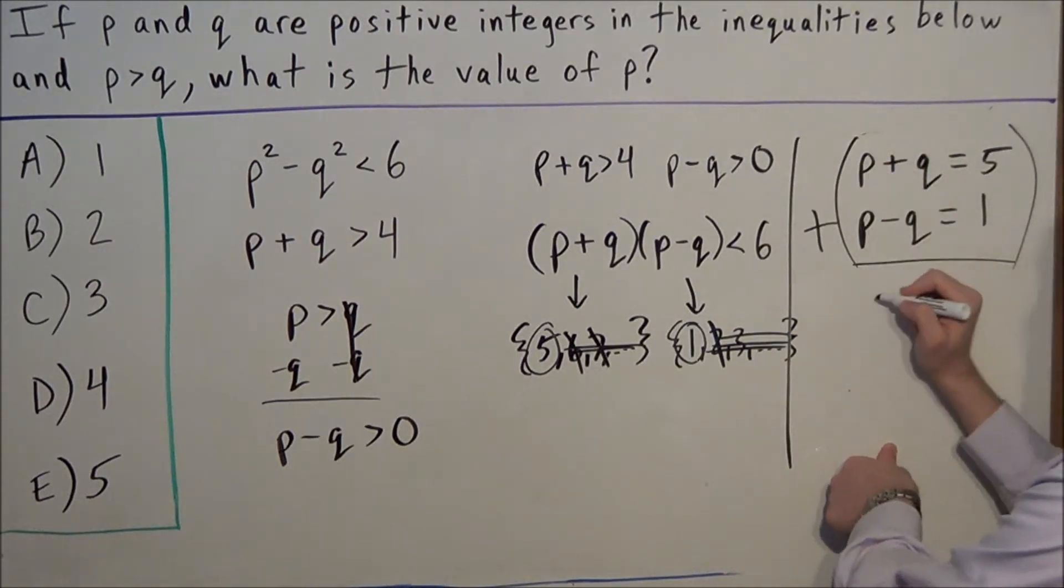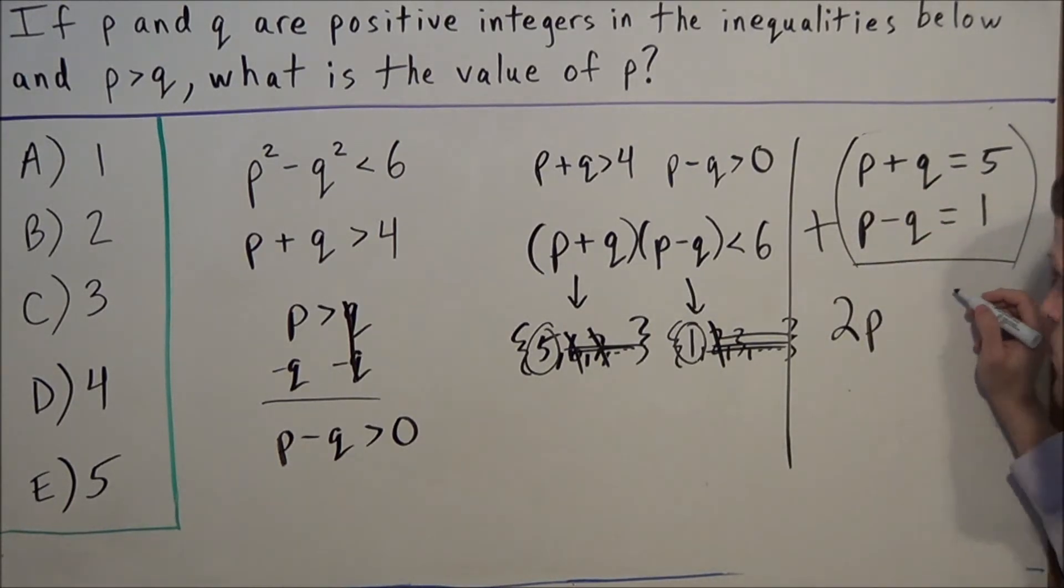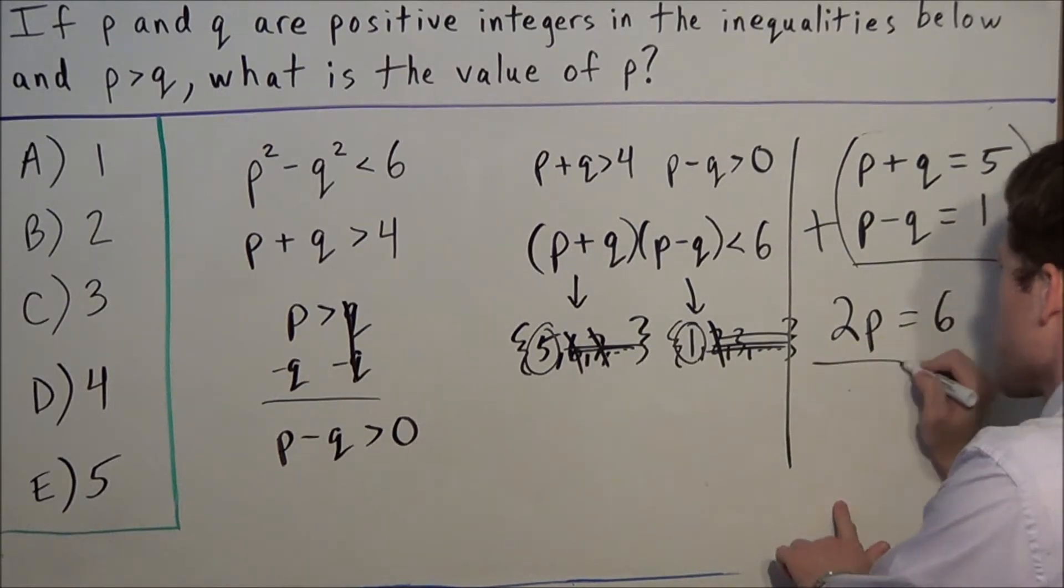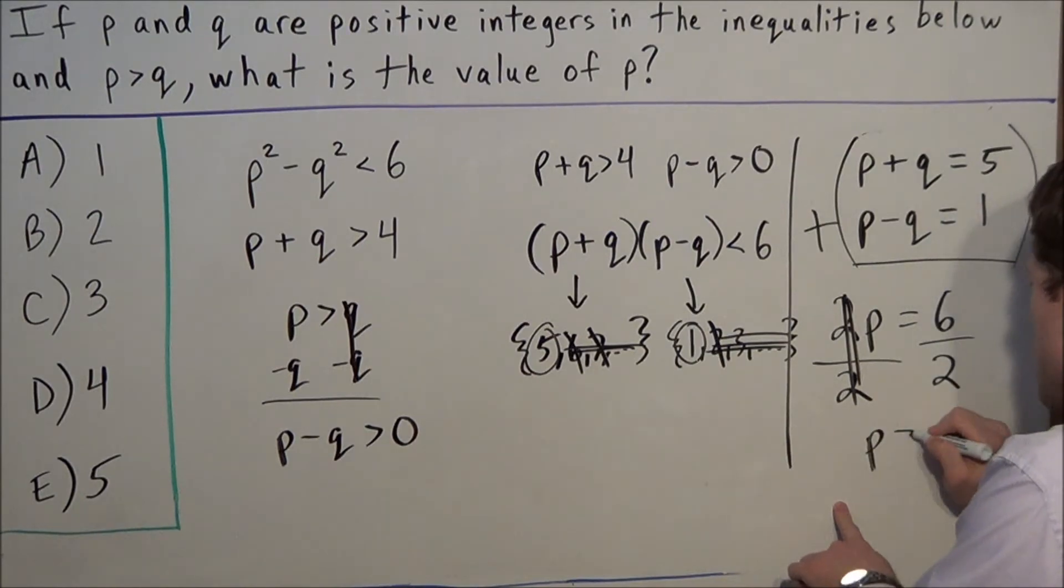We get p + p = 2p, q + (-q) = 0, and 5 + 1 = 6. Dividing both sides by 2, we find that p = 3.